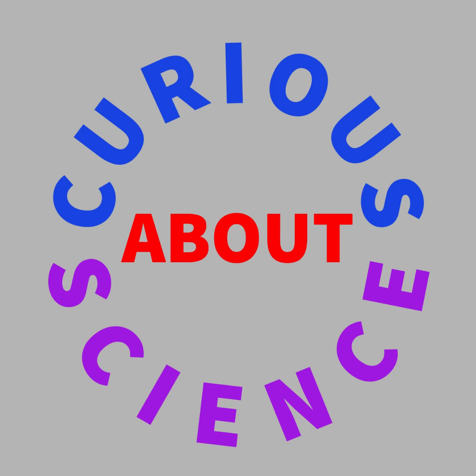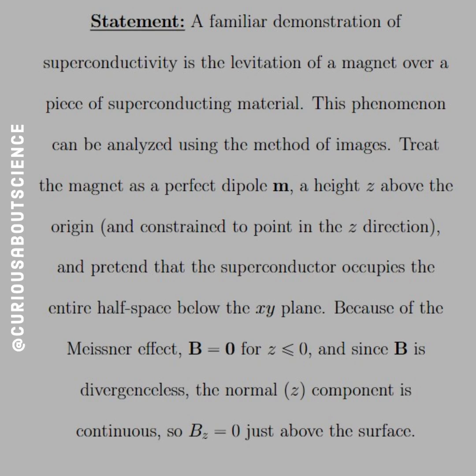Okay, we actually have another really fun question to dive into here. The statement reads that a familiar demonstration of superconductivity is the levitation of a magnet over a piece of superconducting material. This phenomenon can be analyzed using the method of images.